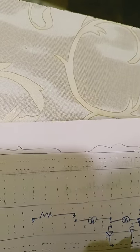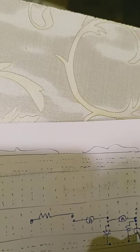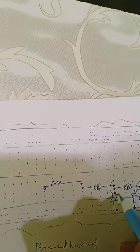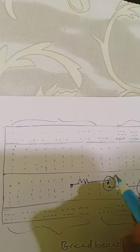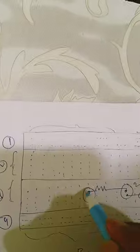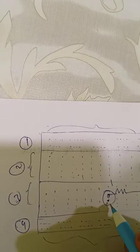Now let's check. This is node 4, this is node 3, this is node 2, and this is node 1. At node 1, you have 2 elements. I need to connect the negative terminal of the battery here — I connect the negative terminal.